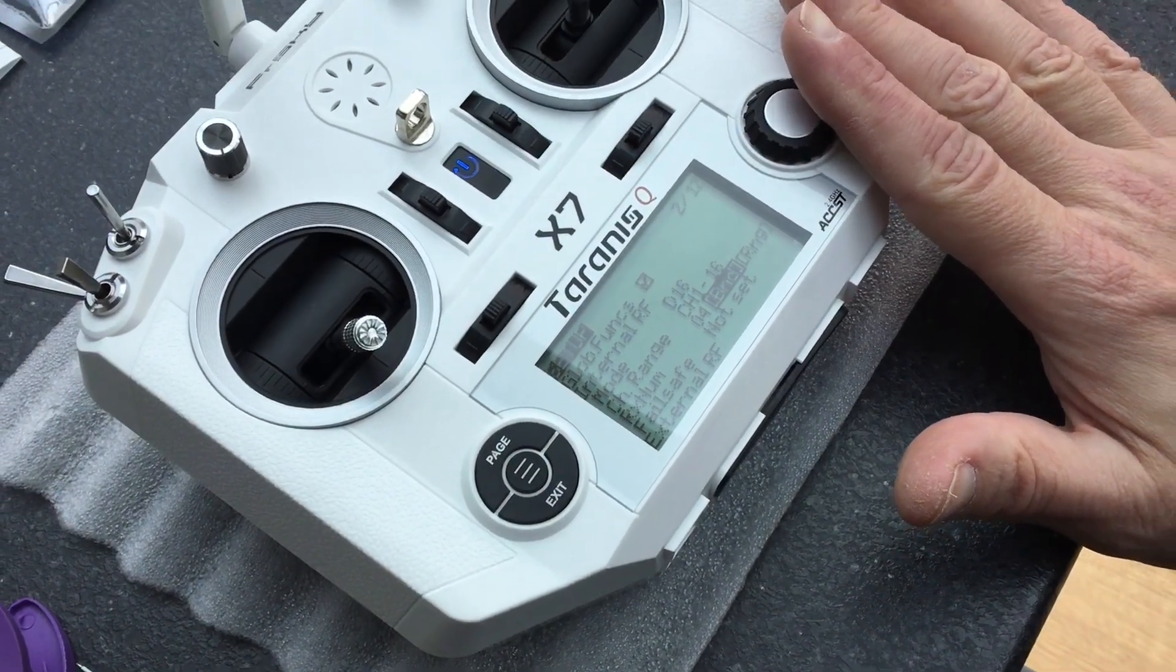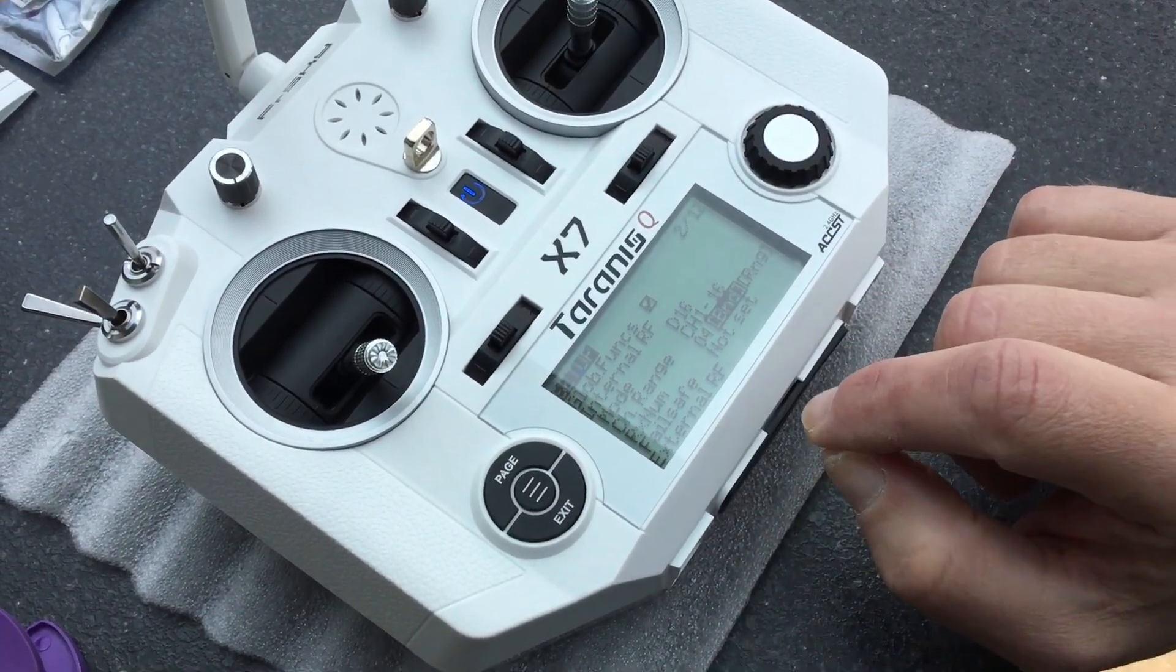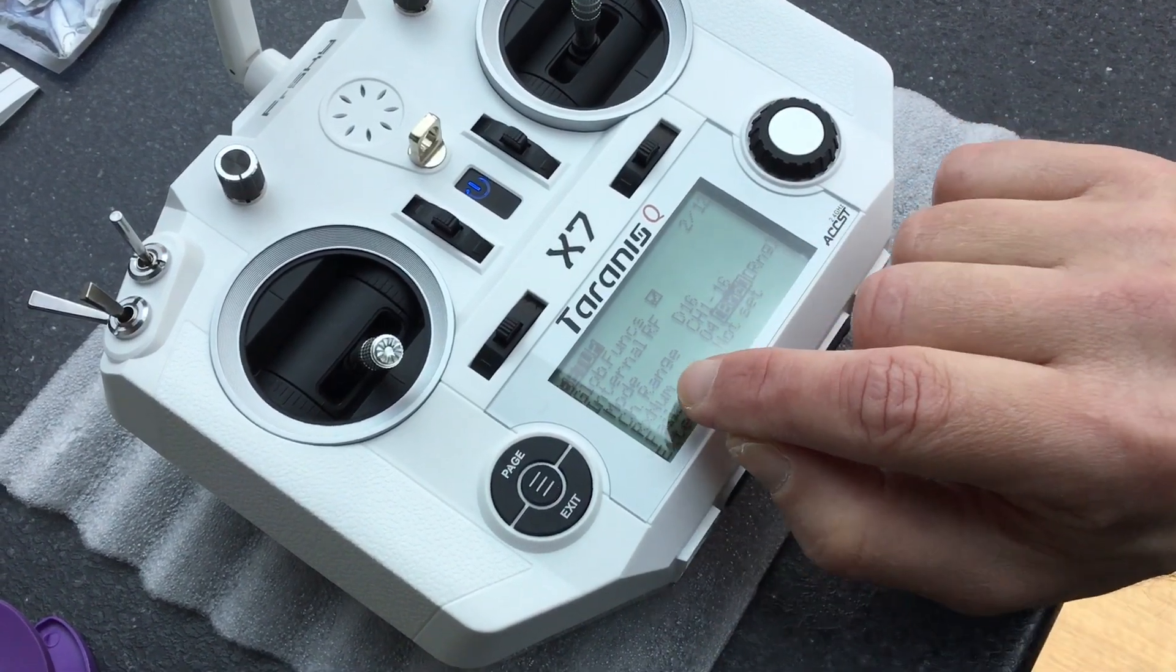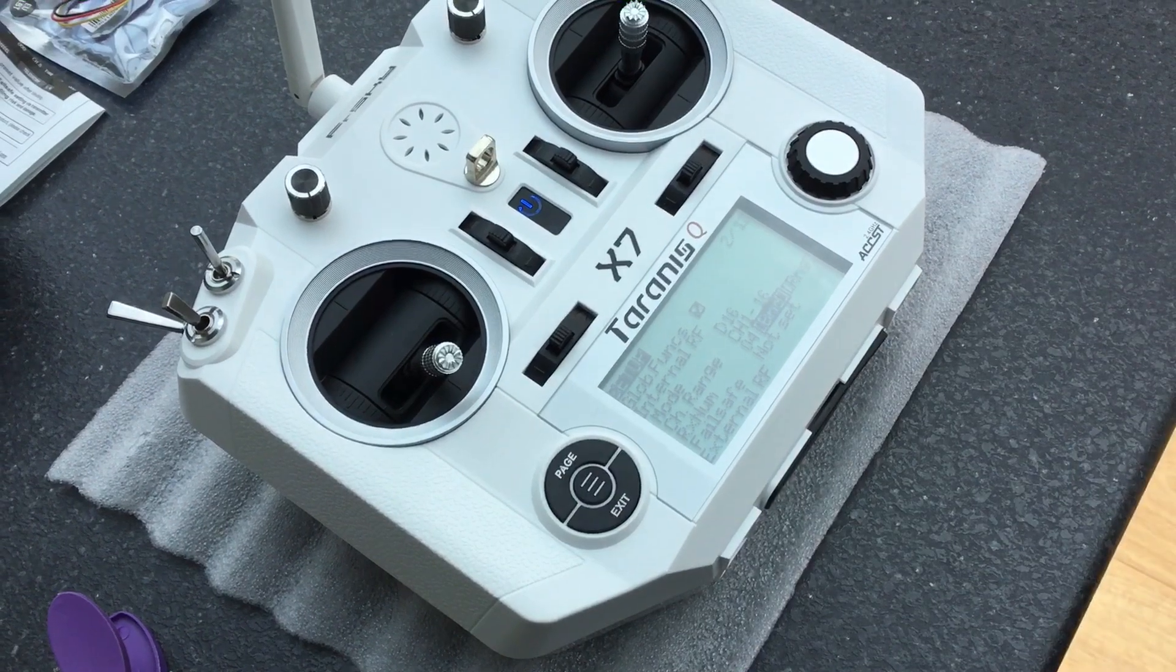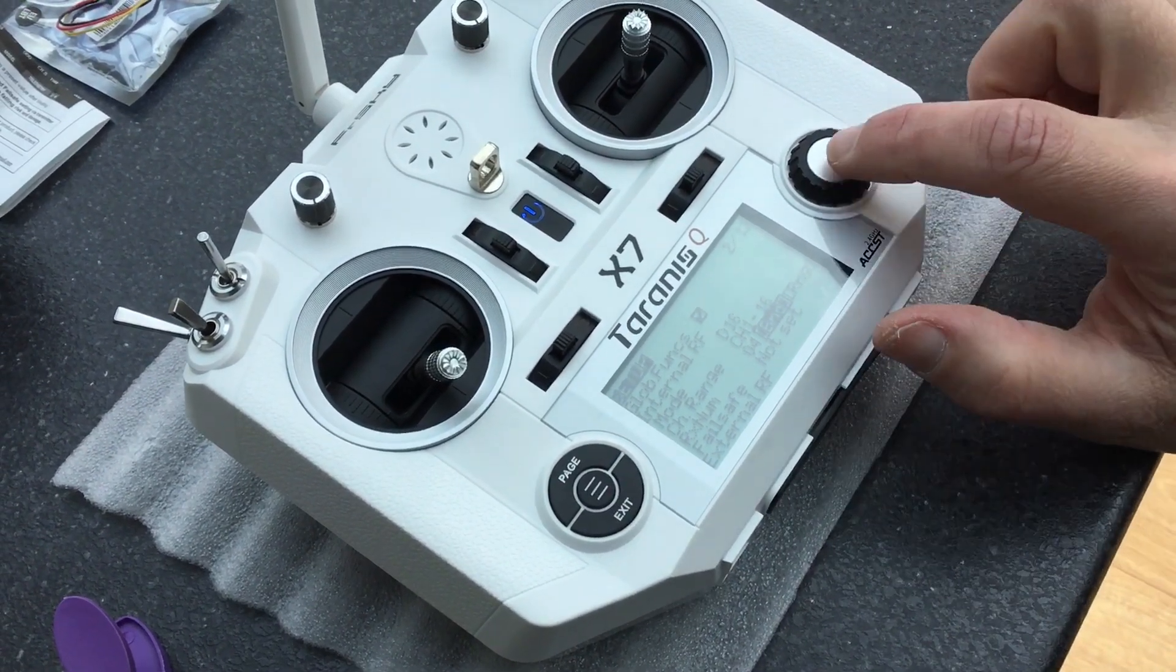So we've got a Turanis QX7 here and we've created a new model and we've got it set so it's on mode D16, channel range 1 to 16. We're going to put it into bind mode so it'll start chirping.